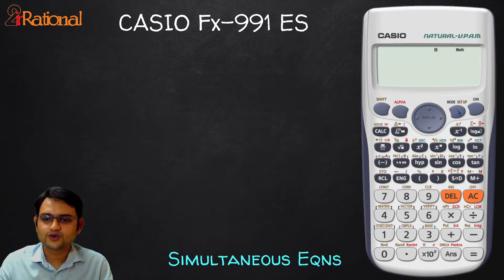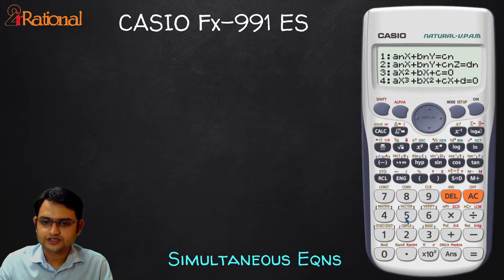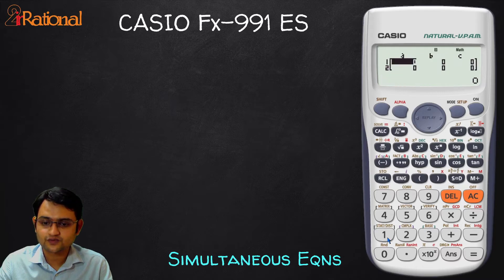The first thing we will do is go to mode and we will go to 5, that is our equation. Here we will see a two variable simultaneous equation as well as a three variable simultaneous equation. First we will go for a two variable simultaneous equation so I will say 1.